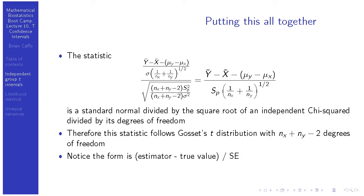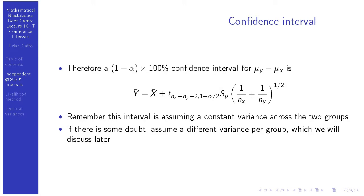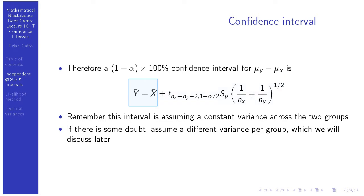It's just like before — we took our statistic, replaced the unknown standard deviation with its estimate, and what would normally be a Gaussian random variable turns into a t random variable. The confidence interval for the difference in means is y-bar minus x-bar, plus or minus the appropriate t-quantile times the standard error. The interval is the estimate plus or minus the appropriate quantile from the appropriate distribution times the standard error.